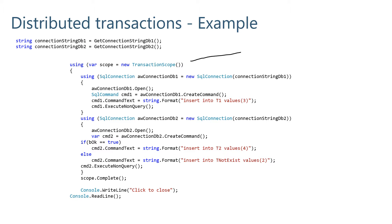The first thing is a new object — a TransactionScope. We are going to maintain a distributed transaction within this scope. So we have the TransactionScope, and this defines when the transaction will be completed. All modifications and connections made from this point to this point will be treated as a single transaction — a unique transaction in distributed mode.